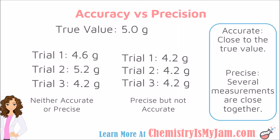In this scenario, you have a sample that you know has a true value of 5.0 grams. So, in order for any measurements you take of this sample to be accurate, they must give you a measurement of 5.0 grams. You take your sample and weigh it three separate times. You can see that the first time you got a measurement of 4.6, then 5.2, and then 4.2. None of those measurements were accurate — none of them gave you the true value of 5.0. Your measurements have quite a bit of range and variability, so these measurements were neither accurate nor precise.